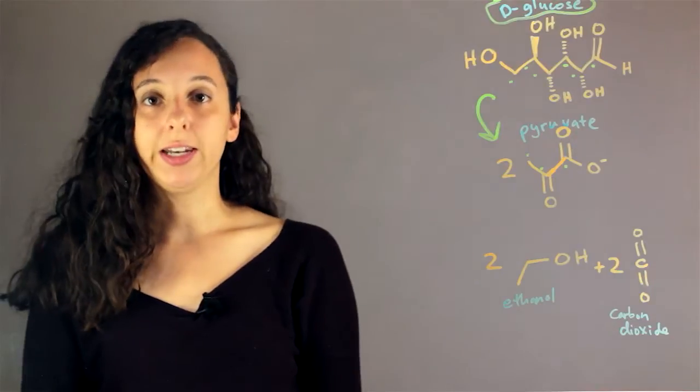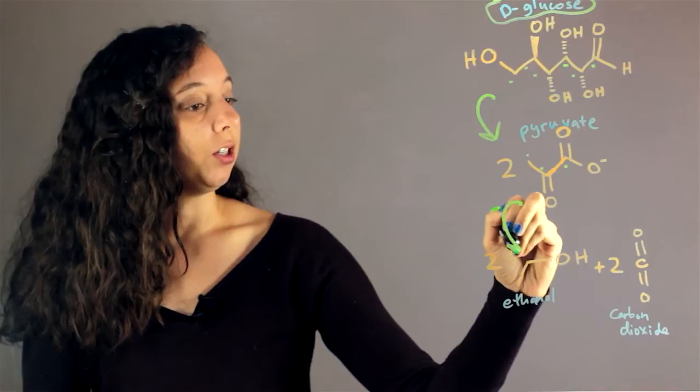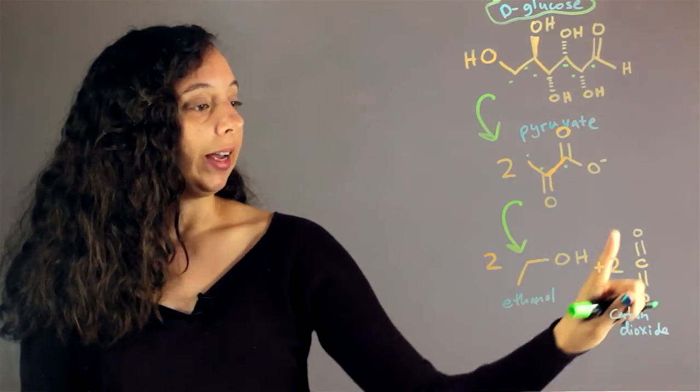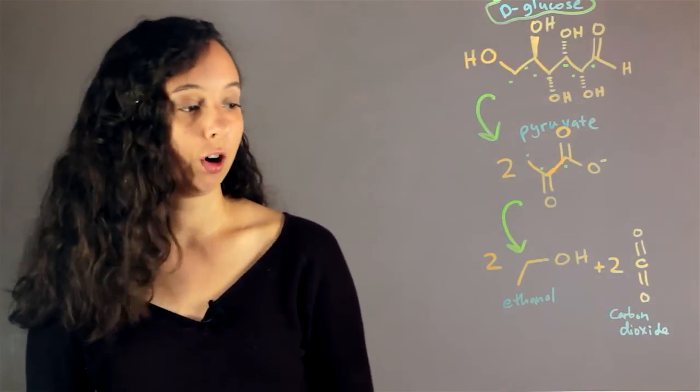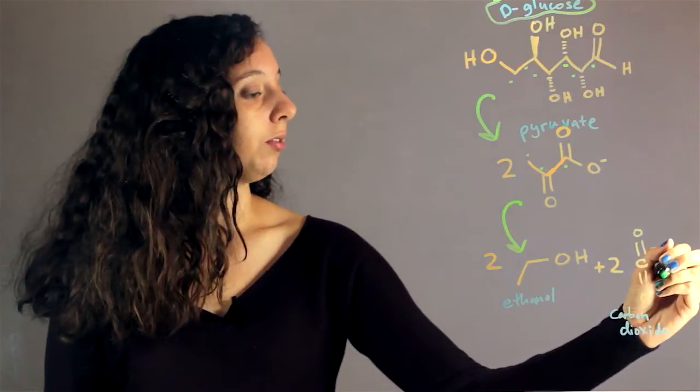The next step of fermentation is taking our pyruvate molecules and making them into an alcohol and a gas. In this case we're forming ethanol and carbon dioxide or CO2.